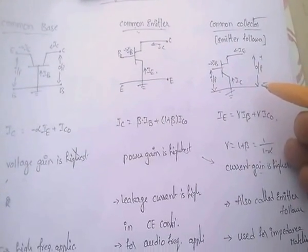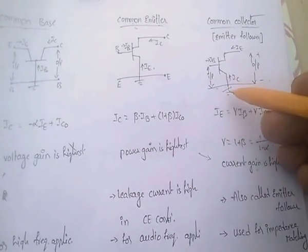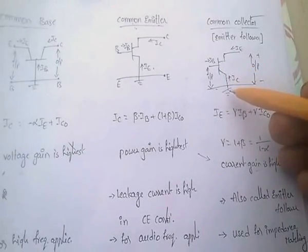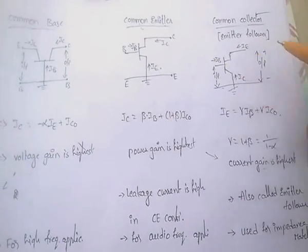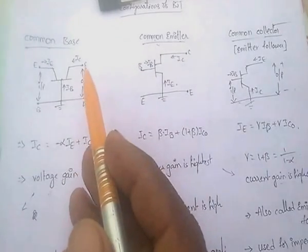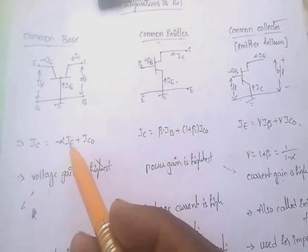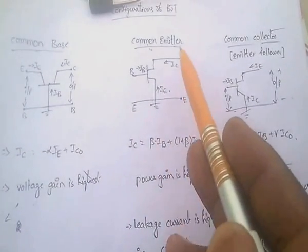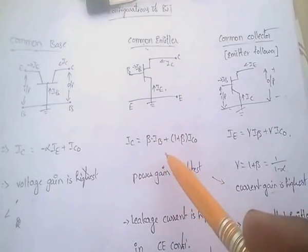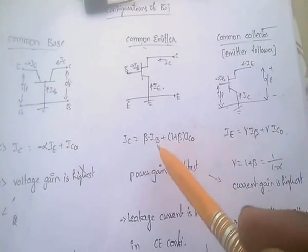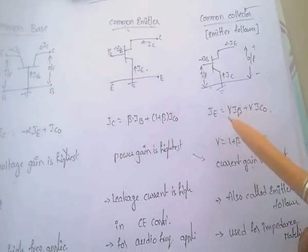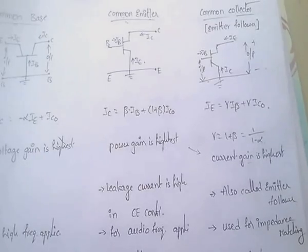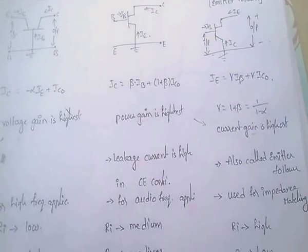In common collector, output is taken at the emitter. The key current equations are: for common base, IC = −alpha × IE + IC0; for common emitter, IC = beta × IB + (1 + beta) × IC0, where IC0 is the reverse saturation current; for common collector, IE = gamma × IB + gamma × IC0.